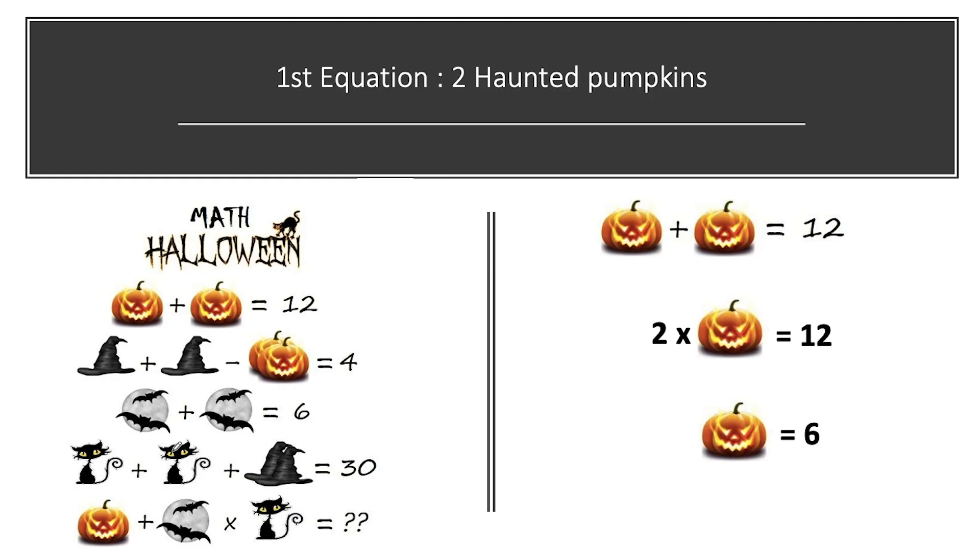Let's begin to see the complete solution. Our first equation, it has 2 haunted pumpkins and their sum is equal to 12. On solving this, we will get 2 into 1 haunted pumpkin is equal to 12. So pumpkin value comes out to be 12 divided by 2 equal to 6.